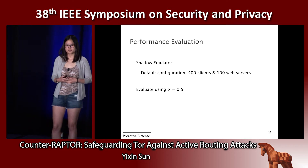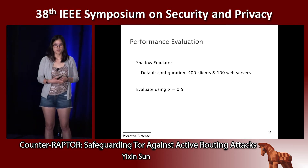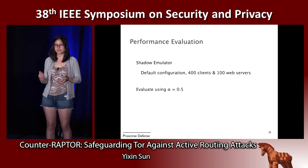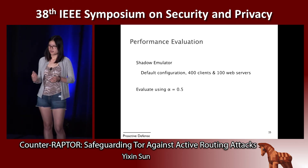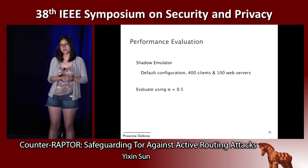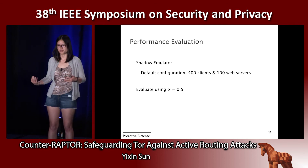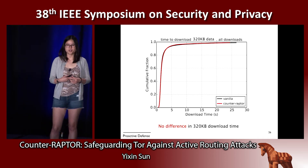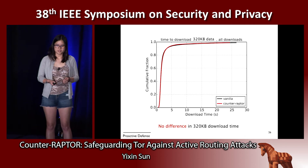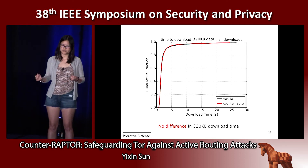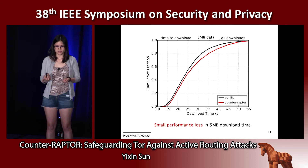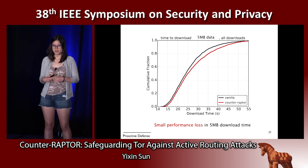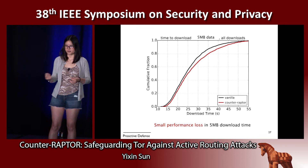For performance evaluation of the Counter-Raptor algorithm, we use the Shadow simulator with the default configuration of 400 clients and 100 web servers, evaluating at alpha equals 0.5, giving equal weight to resilience and bandwidth. For 320 kilobytes of data download there is essentially no difference between vanilla Tor and Counter-Raptor. For a much larger five-megabyte download there is a small performance loss in Counter-Raptor compared to vanilla Tor.